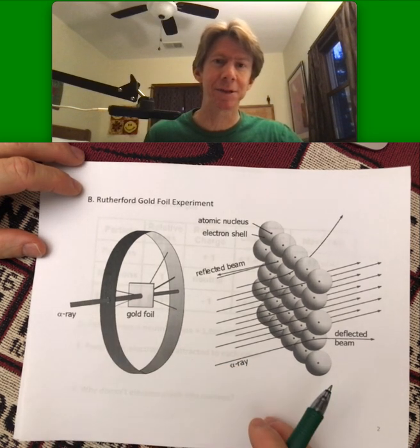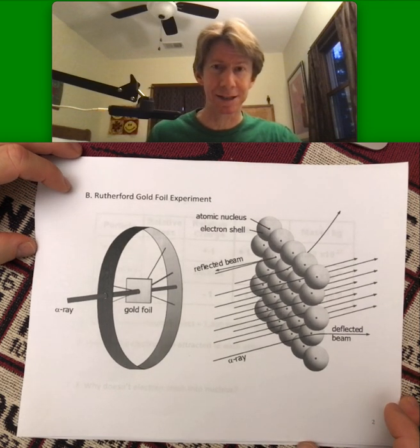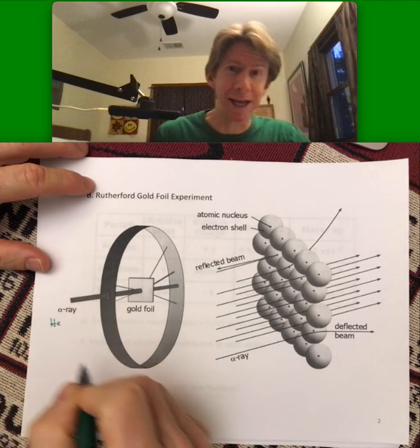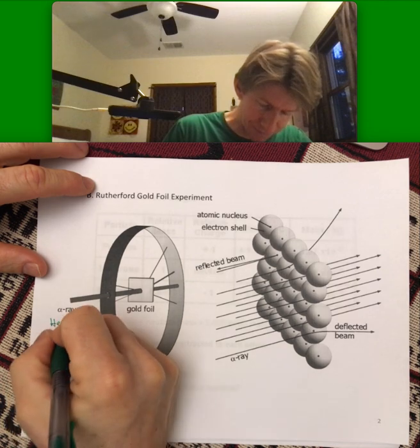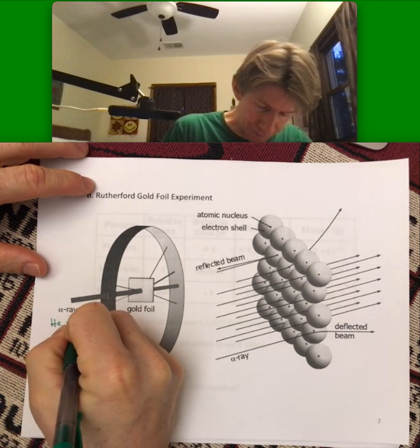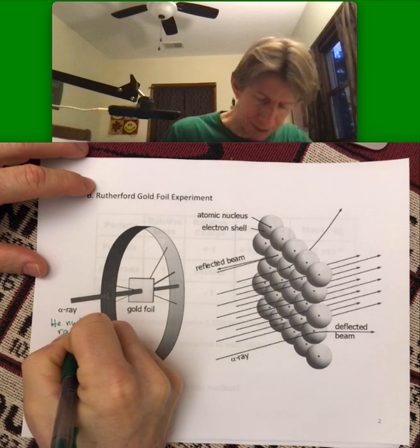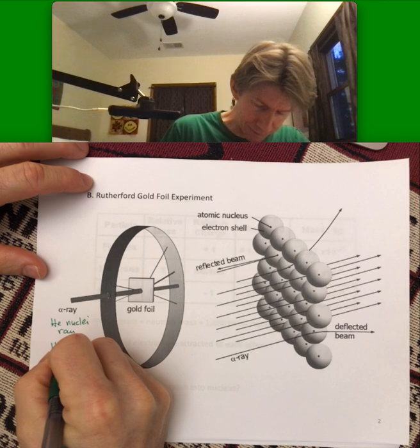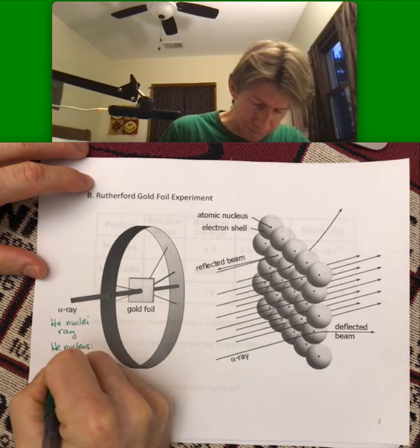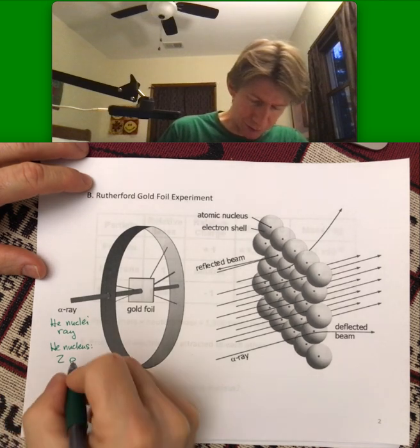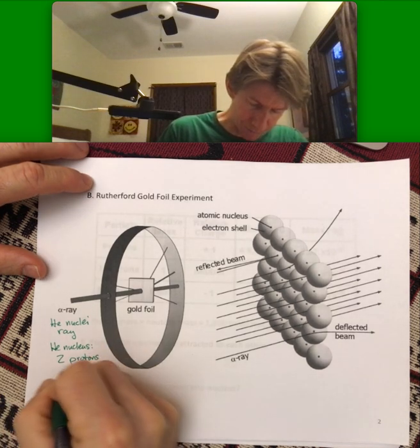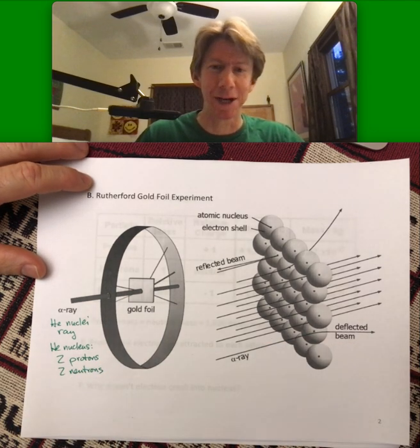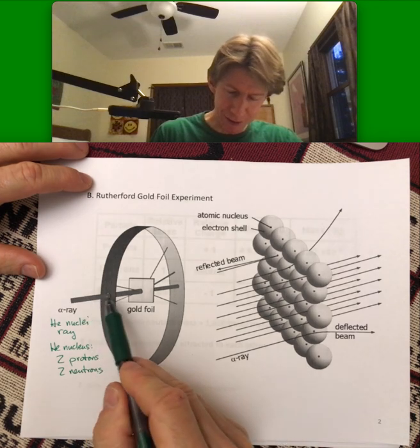An alpha ray is something that you will most likely see again if you're taking second semester general chemistry. But an alpha ray is a ray of helium nuclei. And a helium nucleus has two protons and two neutrons. And it's a whole other discussion about how they get an alpha ray. But what he did was he shot this through the foil.